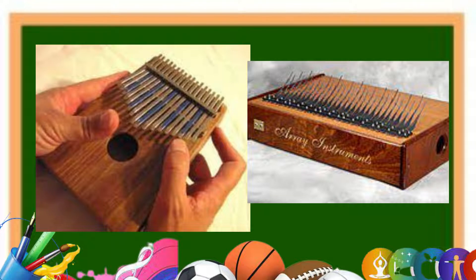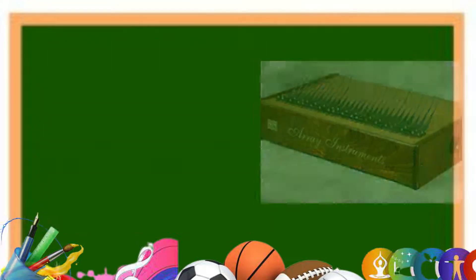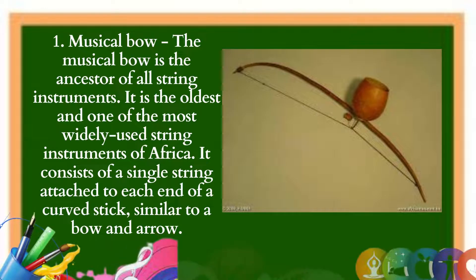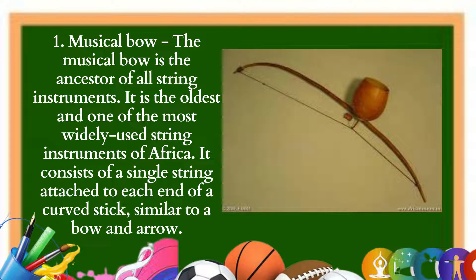D: Cordophones. Cordophones are instruments which produce sounds from the vibration of strings, including bows, harps, lutes, zithers, and lyres of various sizes. 1. Musical bow: The musical bow is the ancestor of all string instruments and one of the most widely used string instruments of Africa. It consists of a single string attached to each end of a curved stick, similar to a bow and arrow. The string is either plucked or struck with another stick, producing a percussive yet delicate sound. The earth bow, mouth bow, and resonator bow are the principal types.